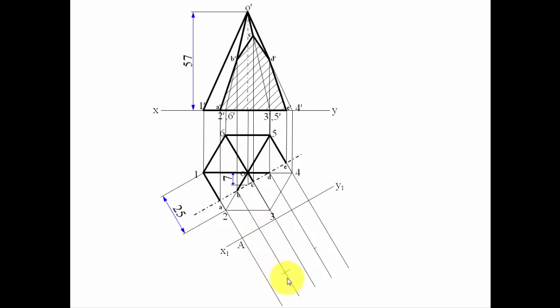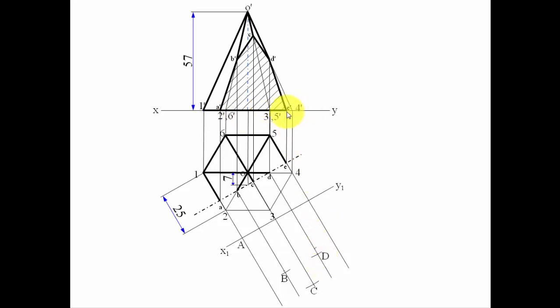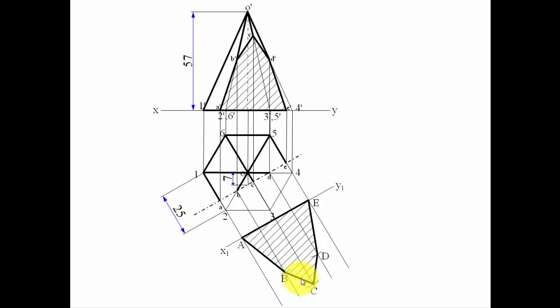Using the compass radius for B, come down to the perpendicular from B and mark the arc - that's point B in the true shape. Similarly for C: one leg at the XY line, other leg at C, and with that center put an arc - that's point C. For D: same procedure - that's point D. Point E lies exactly on the XY line, so it also lies on x1-y1. When you join all these points you get the true shape of the section. So here we have the sectional front view, top view, and true shape of the section of a hexagonal pyramid cut by an auxiliary vertical plane at 30 degrees with the VP.